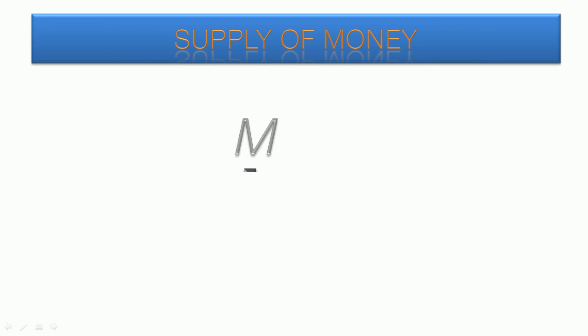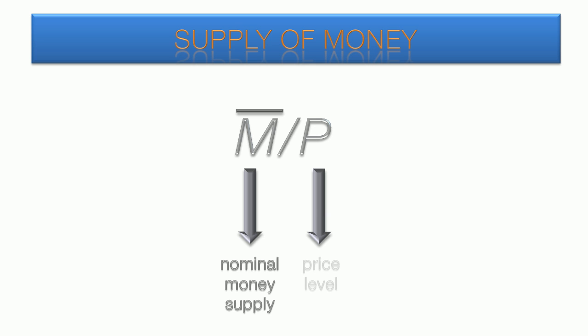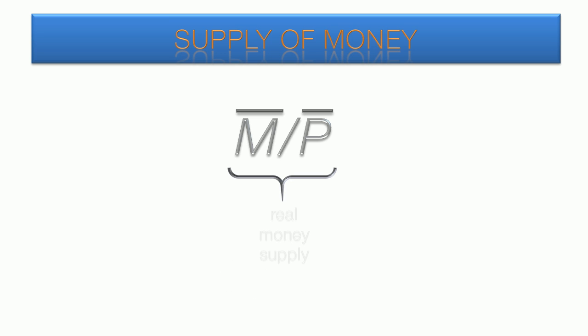Now that we've covered the demand for money, it's time to introduce the supply for real money. This is composed of the nominal money supply — the number value of all cash balances in a country. In this model, the amount of money is set by the central bank, and therefore exogenous. This value is divided by price level, the correction for inflation. Since this model is applied in the very short run, inflation is not a factor, so the price level is exogenous as well. This calculation produces the real money supply.